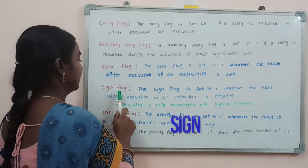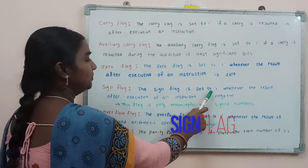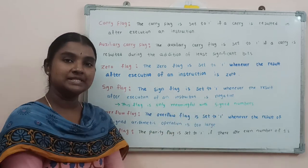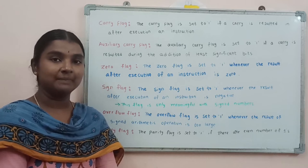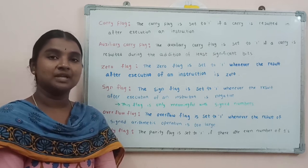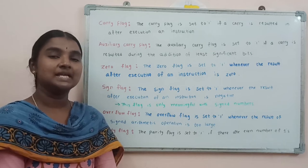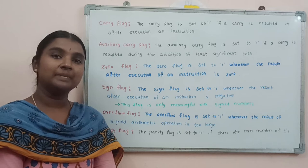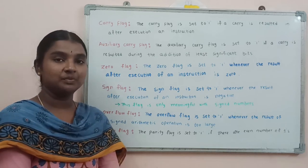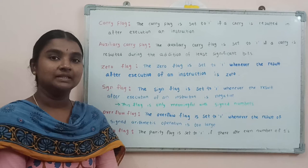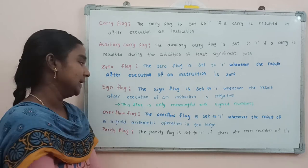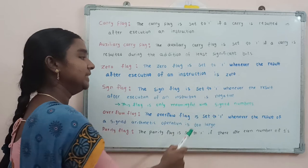The sign flag is set to 1 whenever the result after execution of an instruction is negative. This sign flag is effective with signed numbers. In binary numbers, the most significant bit represents the sign position — if the MSB is 0, the number is positive; if the MSB is 1, the number is negative. So if the most significant bit position is 1, the sign flag is set to 1; otherwise it is set to 0. This flag is only meaningful with signed numbers.